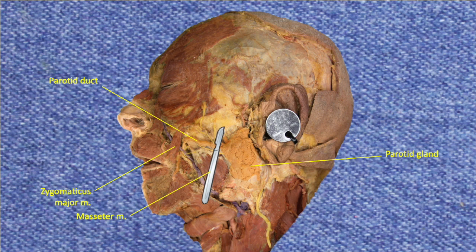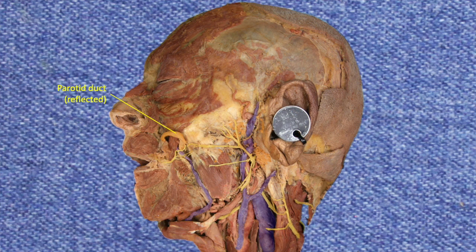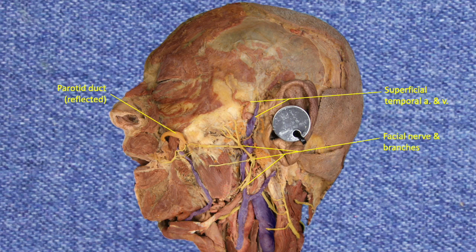We start the dissection by cutting the parotid duct and reflecting it medially. At this point, we start the laborious process of removing the parotid gland using scissor technique, but we have to be precise because we're looking for delicate nerves that run through the parotid gland. After carefully removing the parotid gland, the facial nerve and some of its branches become evident. In a perfect dissection, we would find five to six terminal branches. We can also see the superficial temporal artery, a terminal branch of the external carotid artery, and its corresponding vein.